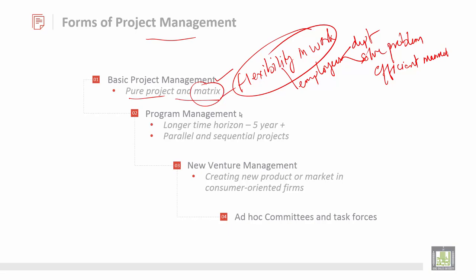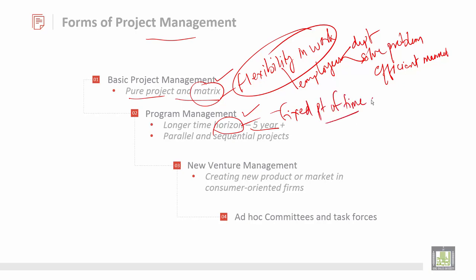The next form is program management, where you have a longer time horizon — here given as five years. It is a fixed point of time in the future. Program management involves both parallel and sequential approaches to solve problems efficiently.